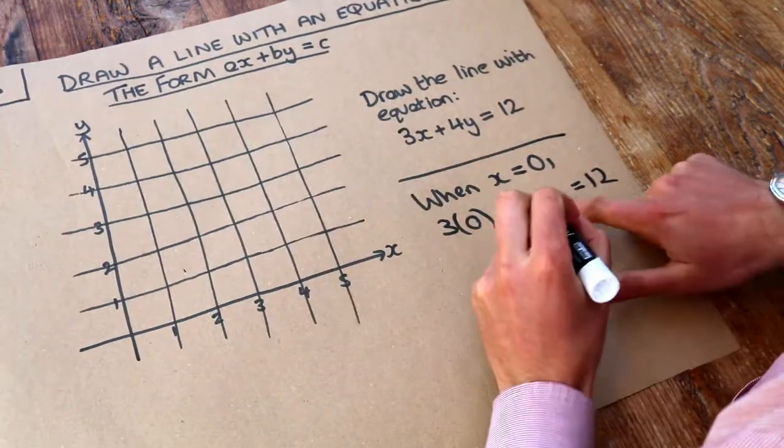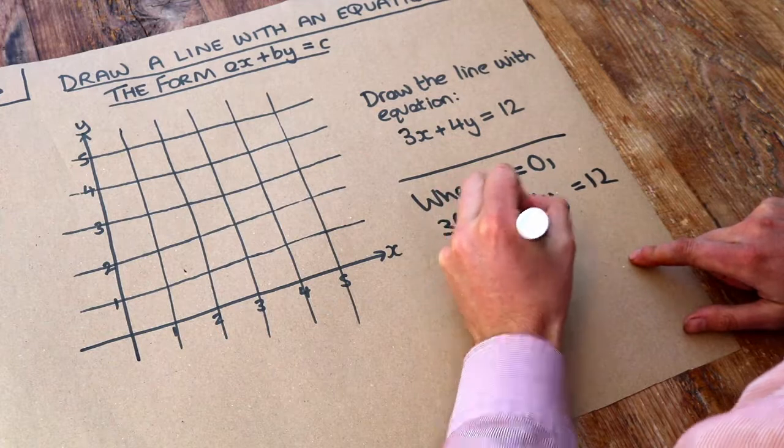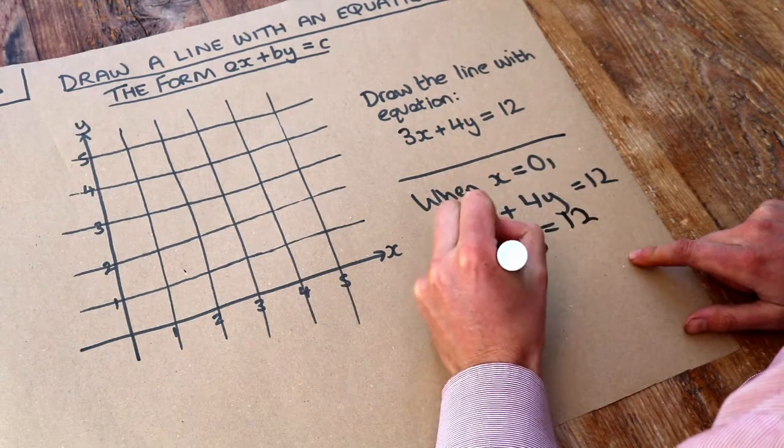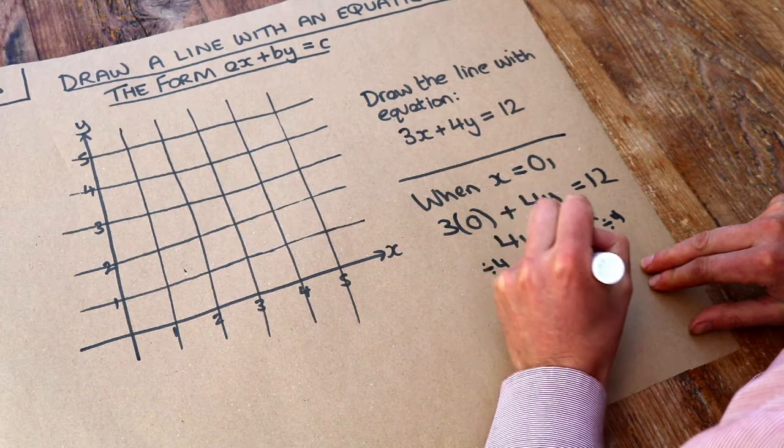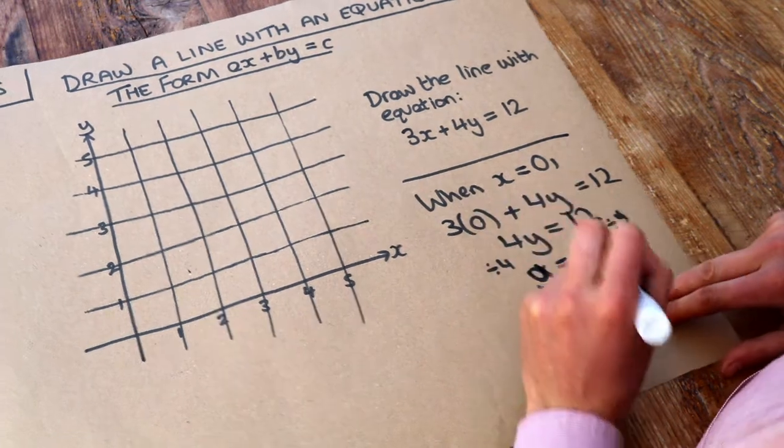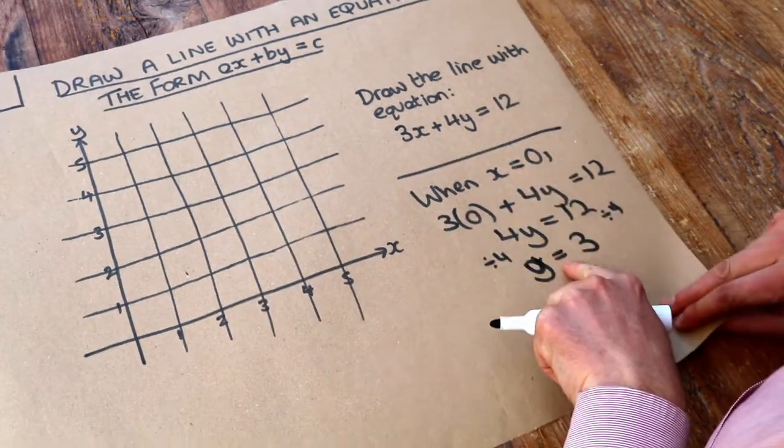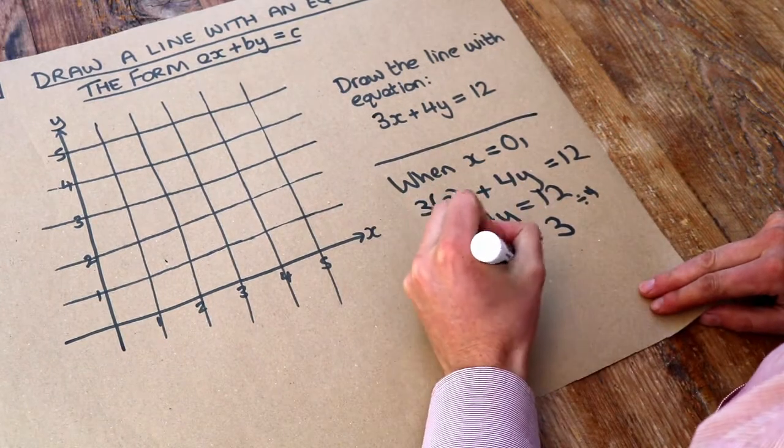If we divide both sides of the equation by four, we get y equals three. So we saw that when x is zero, y is three, so that gives us the point zero three.